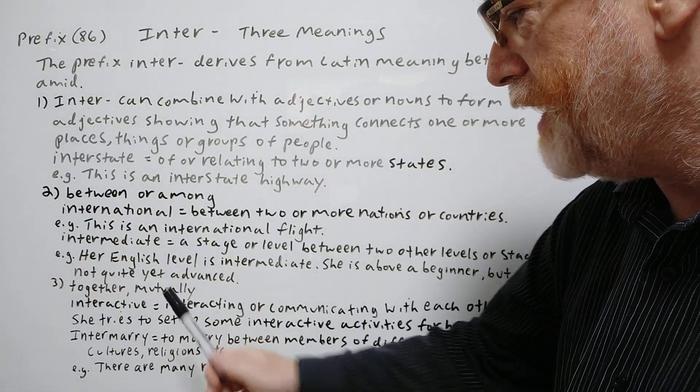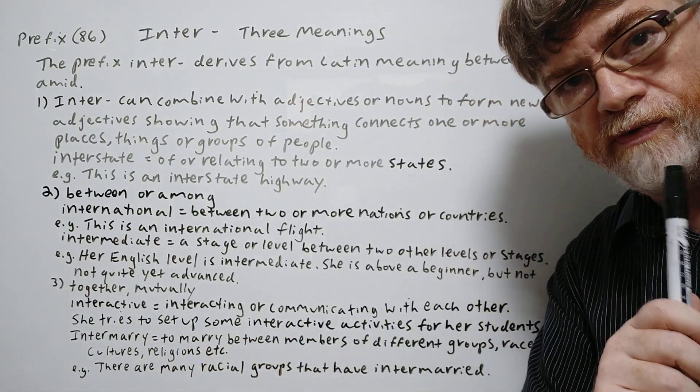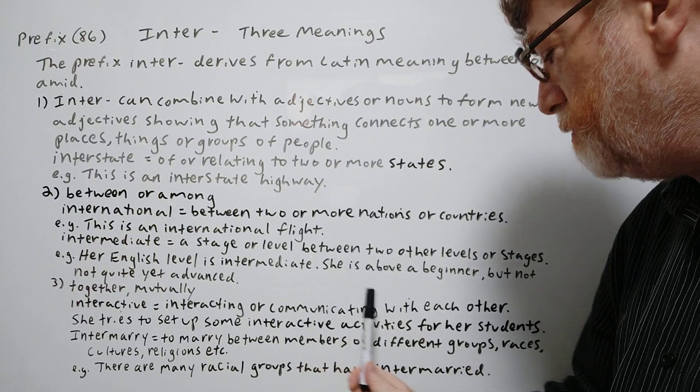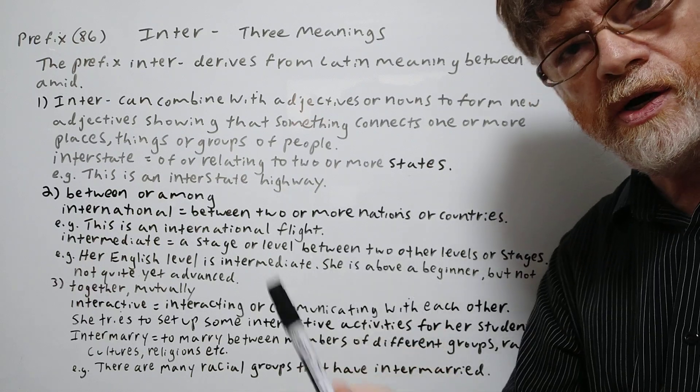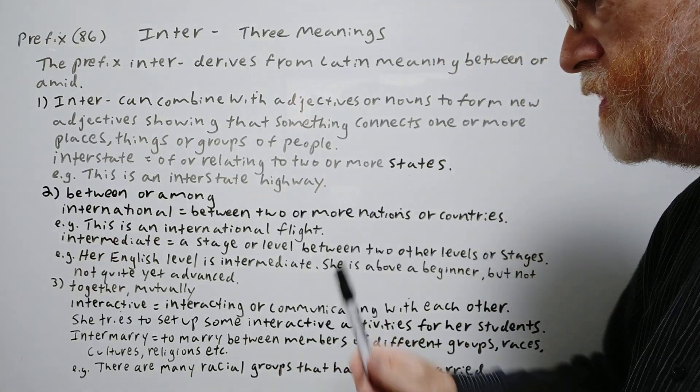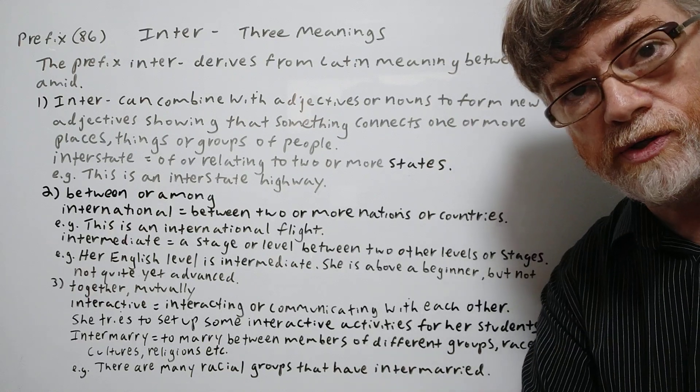The third one here, together or mutually. Interactive is our first word example. Interacting or communicating with each other, or basically you're responding to each other. She tries to set up some interactive activities for her students.